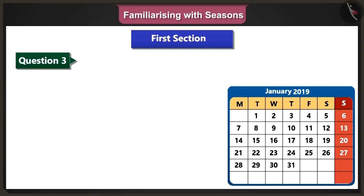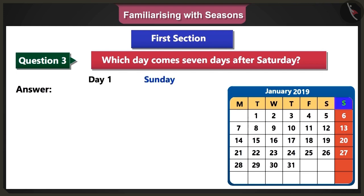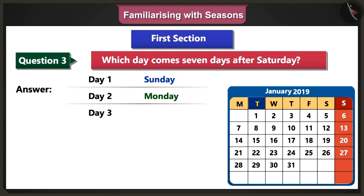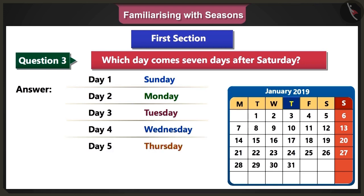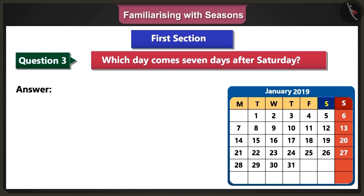Third question: Which day comes seven days after Saturday? Answer: After Saturday comes Sunday, Monday, Tuesday, Wednesday, Thursday, Friday, and Saturday. So Saturday comes again after seven days.